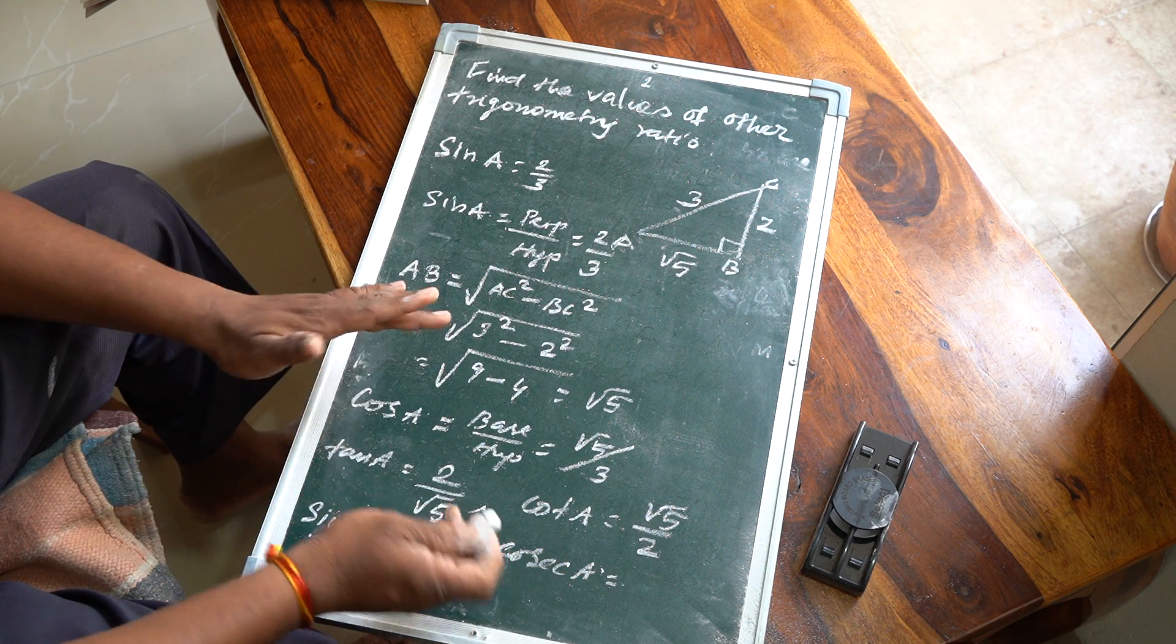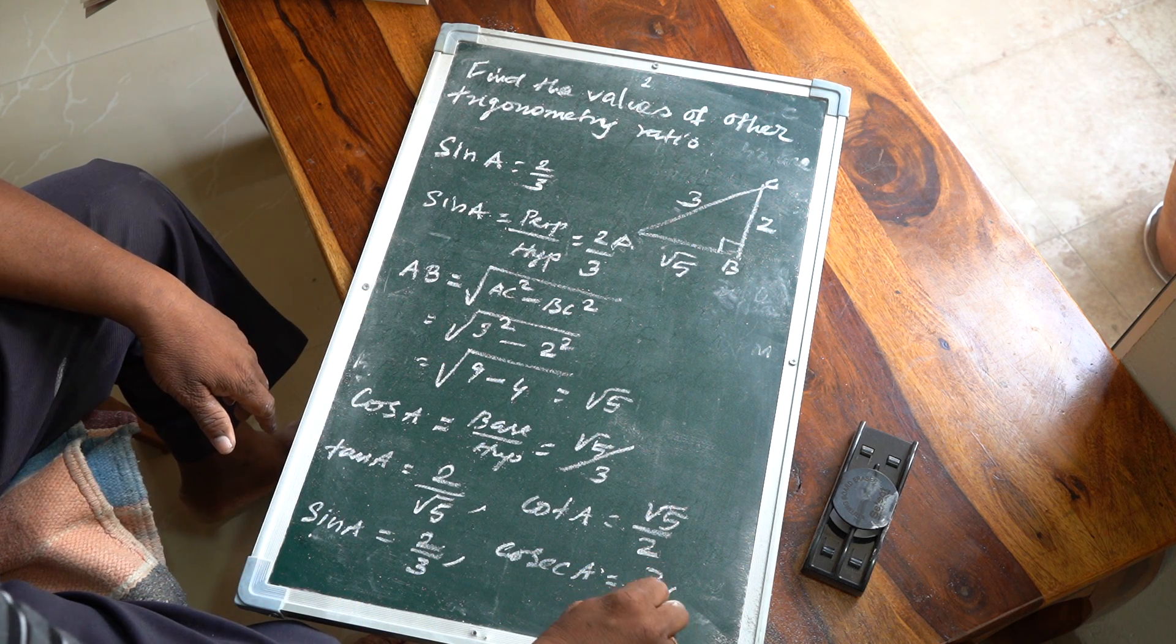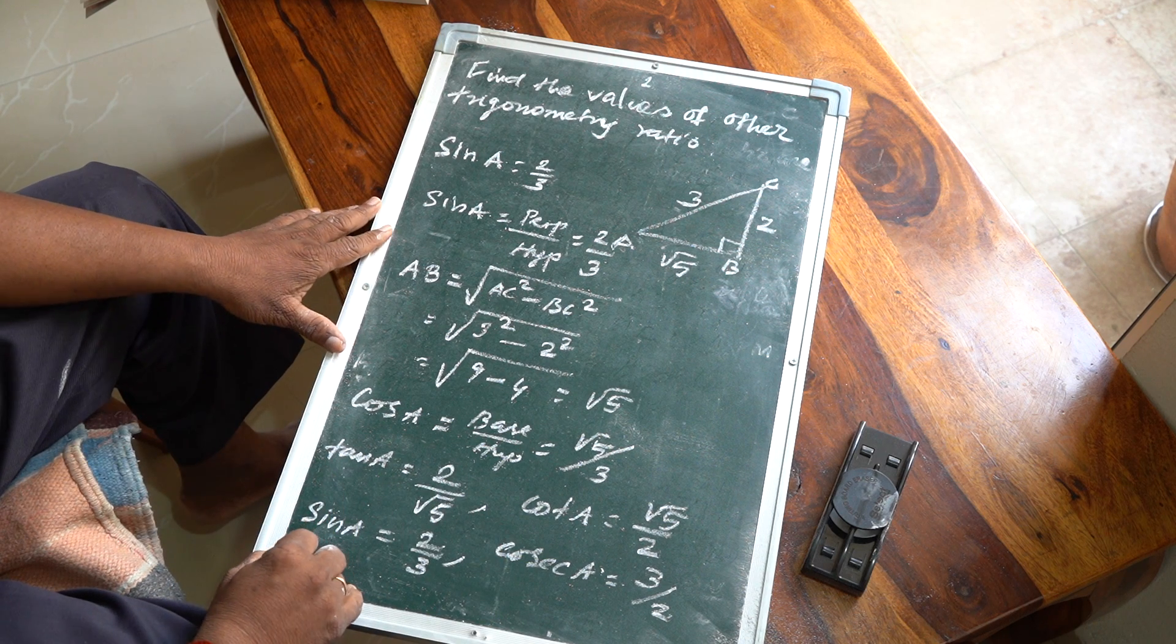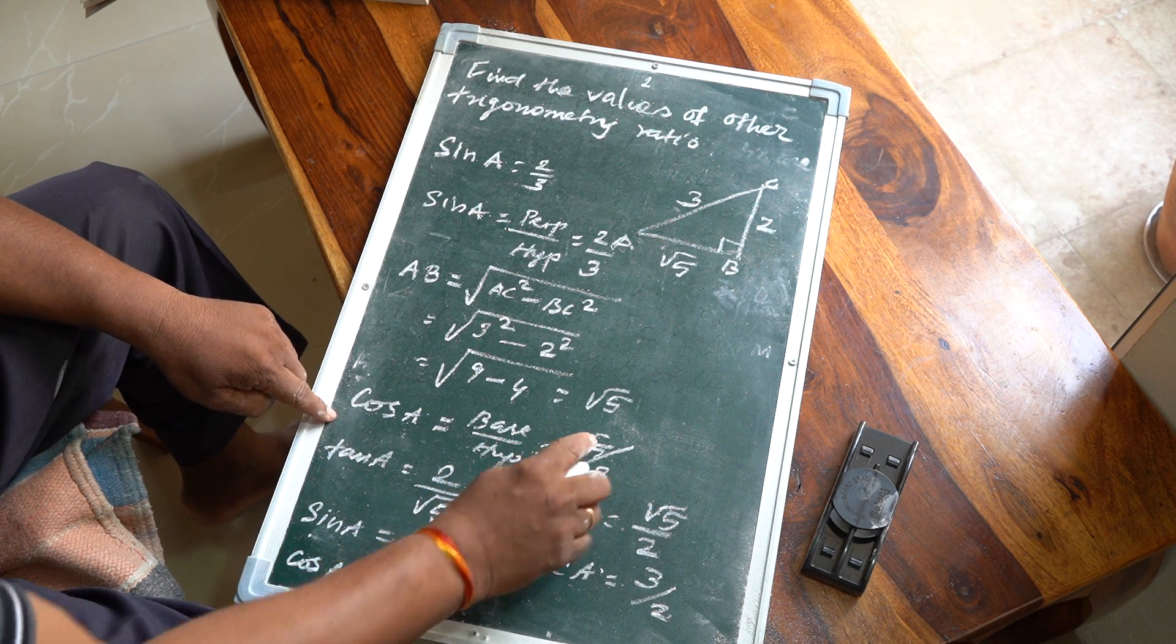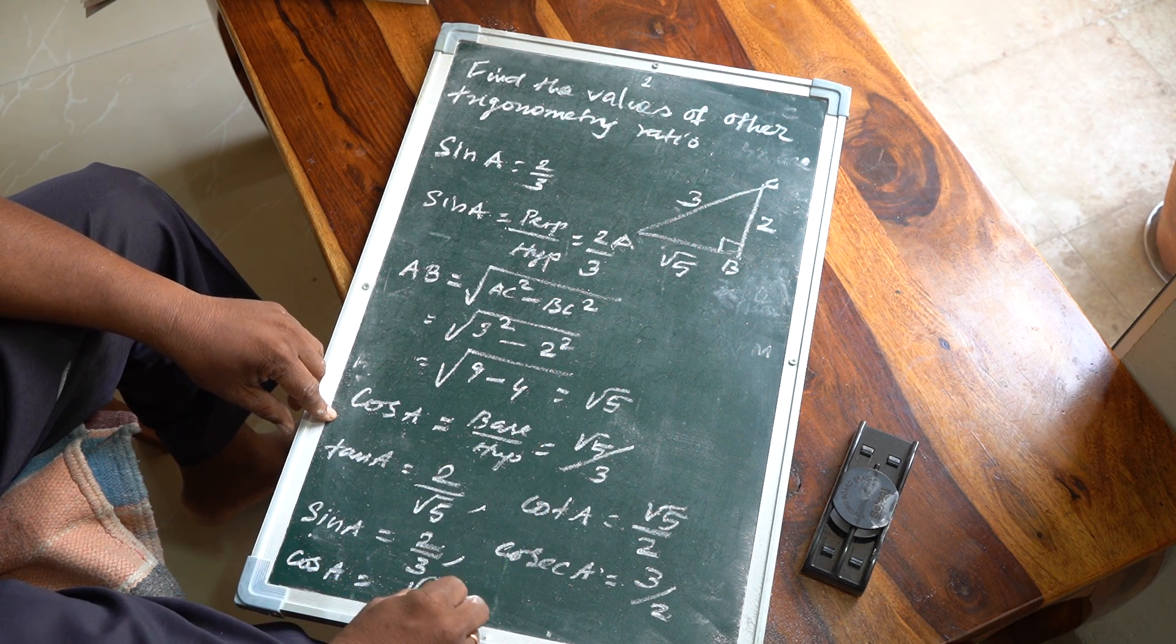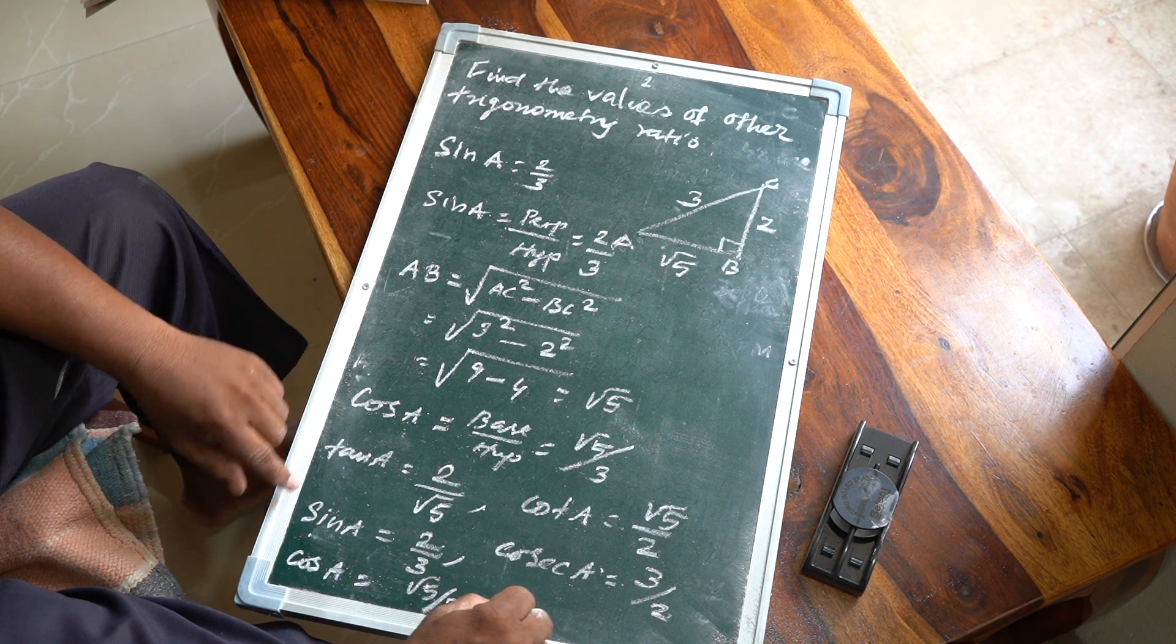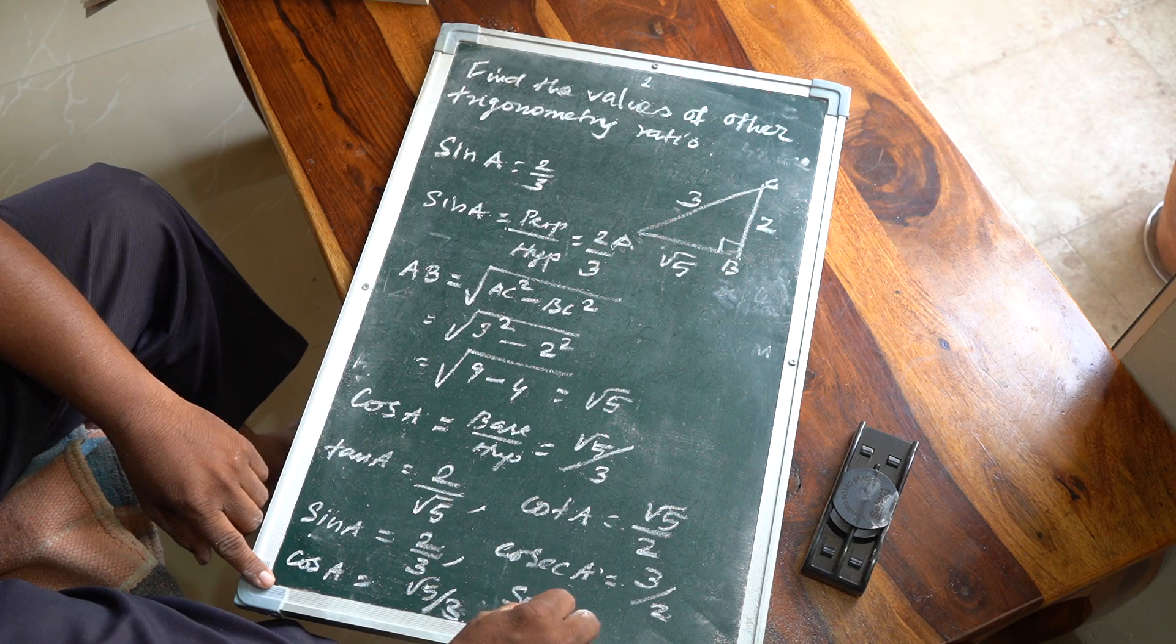Cosec A means just the reciprocal, that is 3/2. And then next, cos A is √5/3, so sec A equals 3/√5.